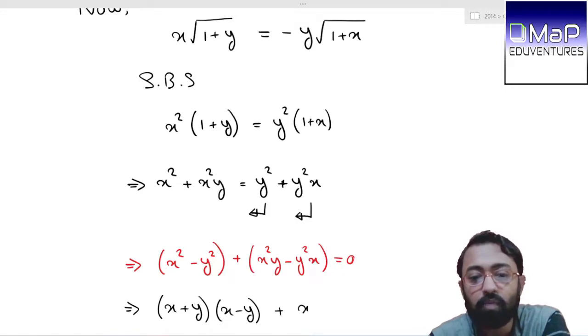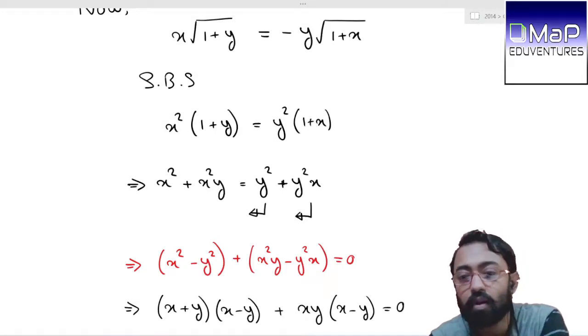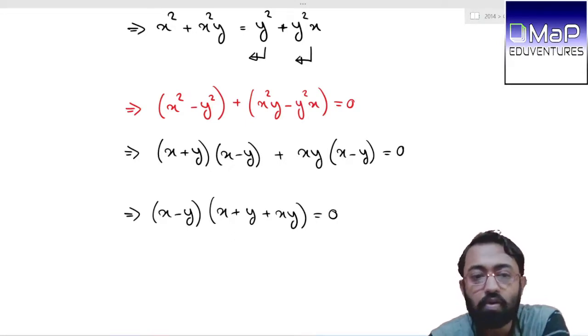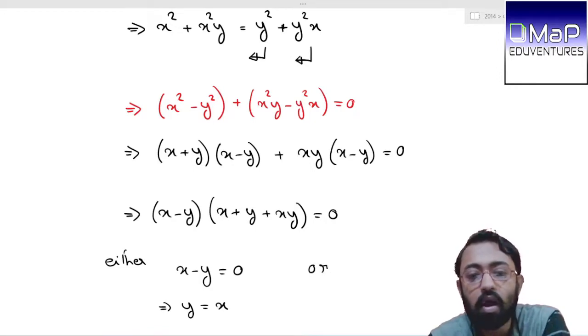Now factor: x square minus y square can be written as x plus y times x minus y using the formula. The second part has xy common, so xy times x minus y. This gives x minus y times x plus y plus xy equals zero. So either x minus y equals zero, which means y equals x, or x plus y plus xy equals zero.